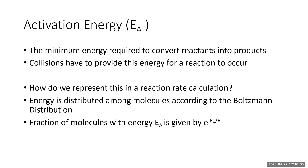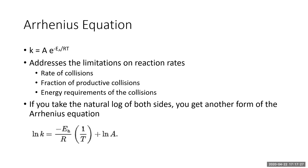Activation energy relates to the Boltzmann distribution, which tells us what fraction of molecules actually have the energy available to undergo the reaction. You've seen this equation before — ea was replaced by delta u — it's the same general concept. The Arrhenius equation relates both the pre-exponential factor and the fraction of molecules with enough energy to react: k equals A times e to the negative Ea over RT.